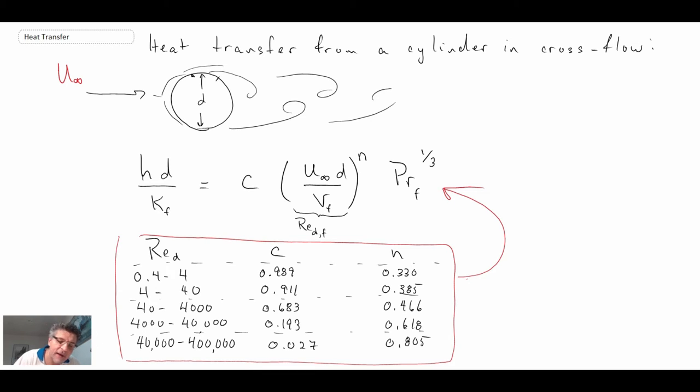And like I said at the end of the last segment, there are expressions that can enable you to determine the value of H as a function of position as you go around the cylinder. But just like for the flat plate, if you recall for the flat plate, we looked at a situation where we could determine H as a function of X.